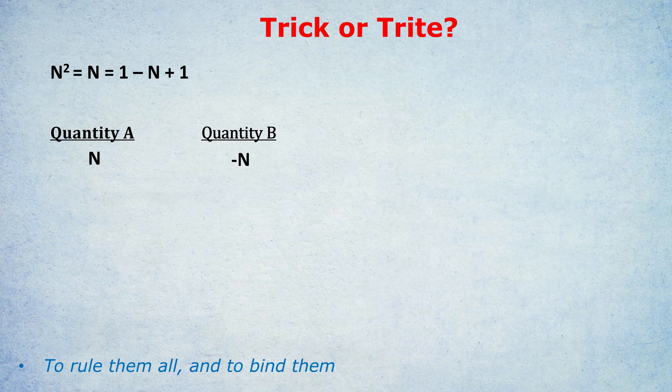1 - 0 is 1, plus 1 is 2. So this doesn't work for 0, but it does work for 1. So we can be sure that n is 1.